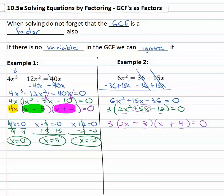So now we are completely factored. So we have a factor of three, a factor of 2x - 3, and a factor of x + 4.